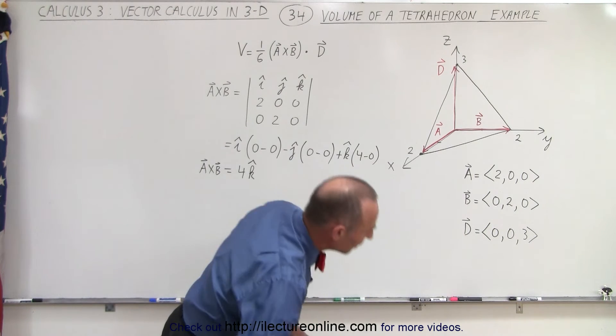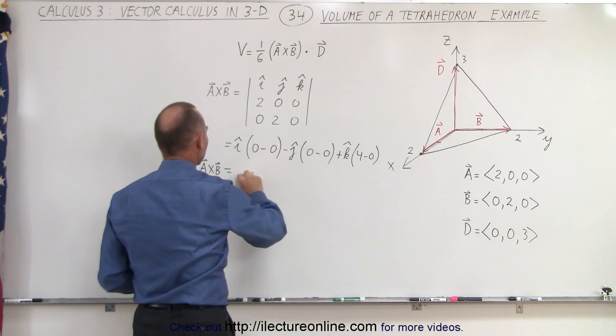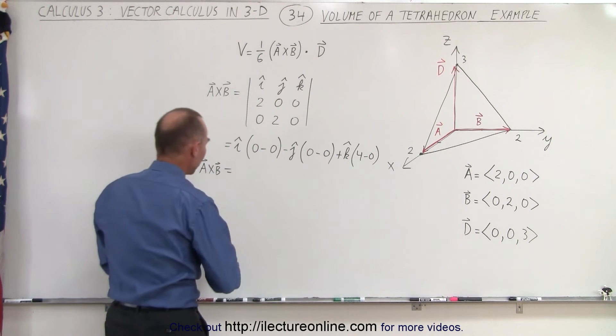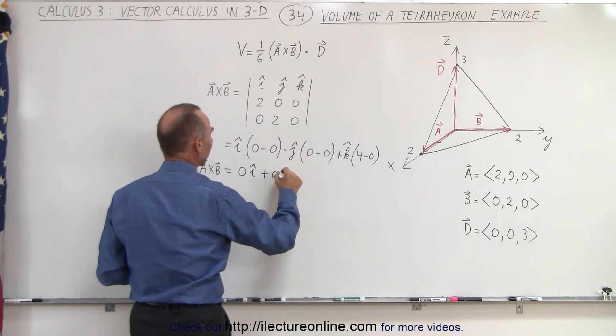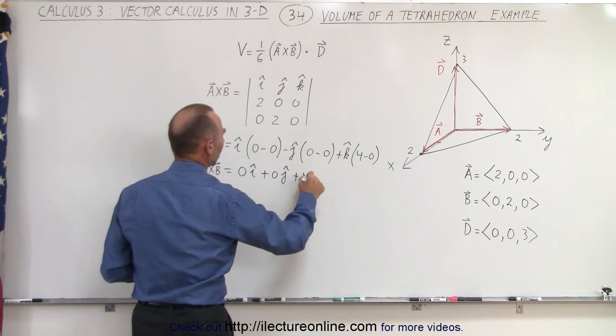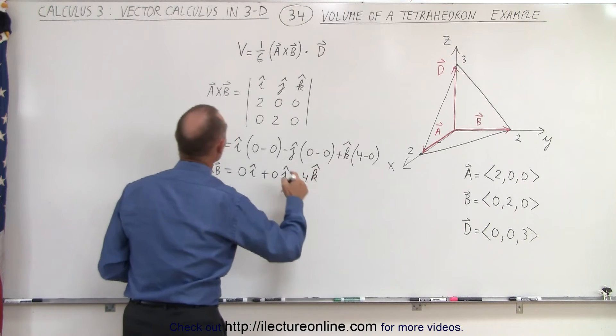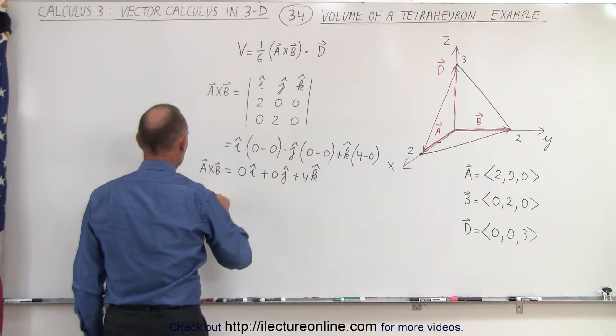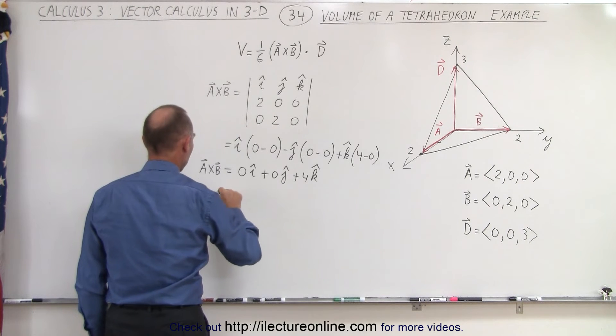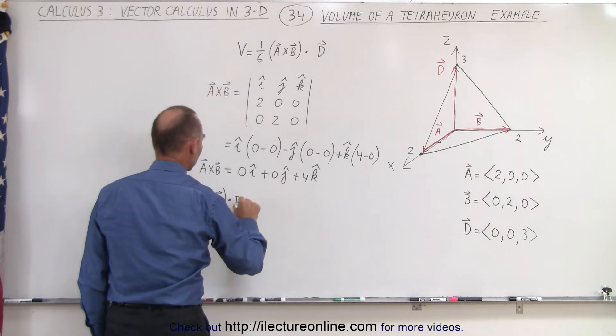I'm going to write it like this with three components, because that makes it easier to see what we're doing when we take the dot product. So 0i plus 0j plus 4k, because now we're going to take the dot product. We're going to do the quantity A cross B dotted with D.